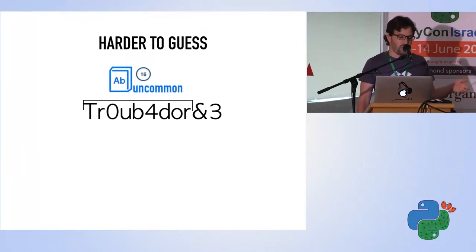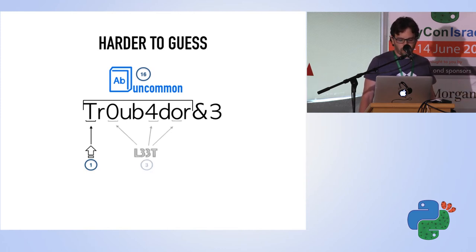We can say that troubadour is just a word in English. It's not a common one, so we can find this in a dictionary with English words—a big one, 2 to the power of 16 words. We also made some modifications. For example, we uppercase the T, so we can reserve one bit for that.